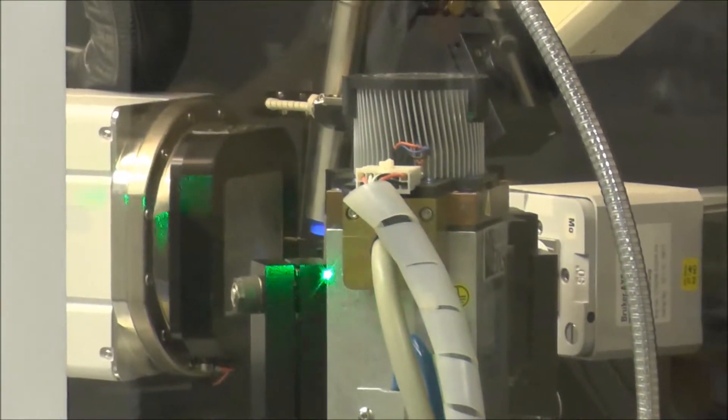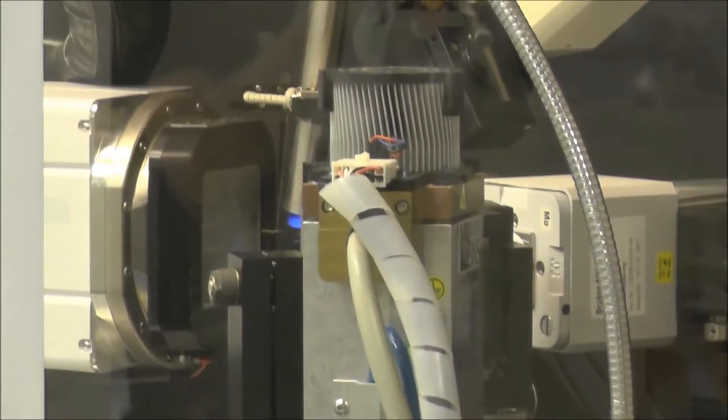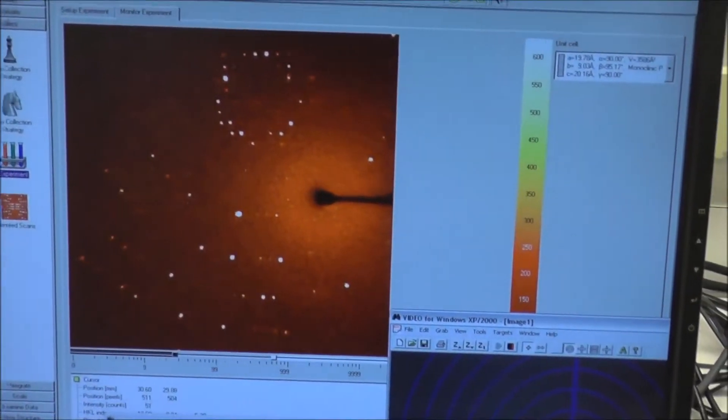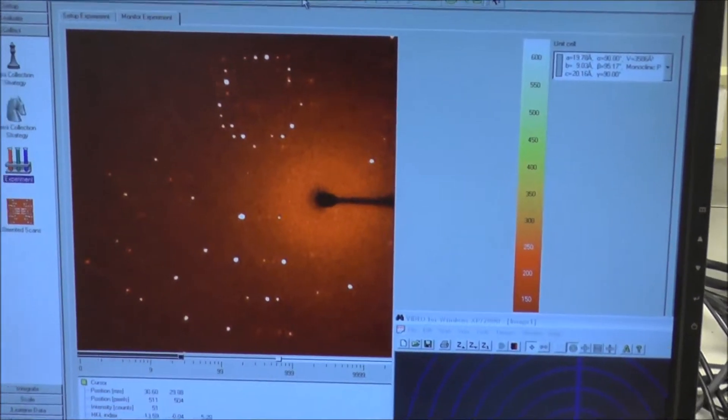On the right side you see the equation of what happens. This is the diffraction image, and we take many, many of those diffraction images.